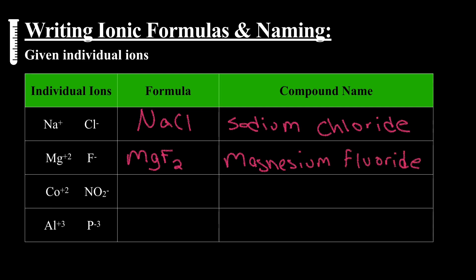Co plus two, NO2 minus. We wind up with Co, parentheses NO2, two. And now cobalt is in the transitional region, multivalent, so we have to do cobalt (II) nitrite. The nitrite comes from the polyatomic name.